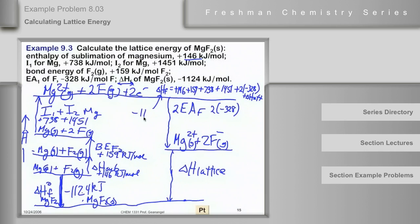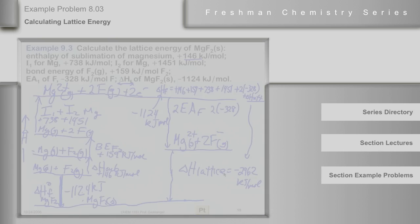Negative, because it's exothermic, kilojoules per mole. And then we solve for delta H of lattice, and the delta H of lattice turns out to be negative 2962 kilojoules per every mole. Notice, MgF2 has, what, three and a half times this exothermic lattice energy as NaCl.